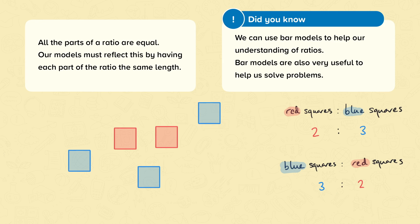We're now going to be applying ratios to share amounts. The first thing to remember is that all parts of a ratio are equal. Our models must reflect this by having each part of the ratio the same length. We'll be using bar models.